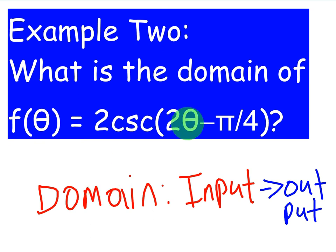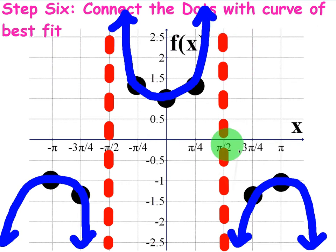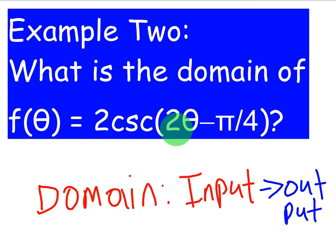For example, maybe we can plug in 2 or π/6 and get something back. But some angles probably won't work. If we go back to our graphs, cosecant looks very similar to secant, and they both have asymptotes. That means there are certain numbers you can't plug into them, no matter how you modify them.